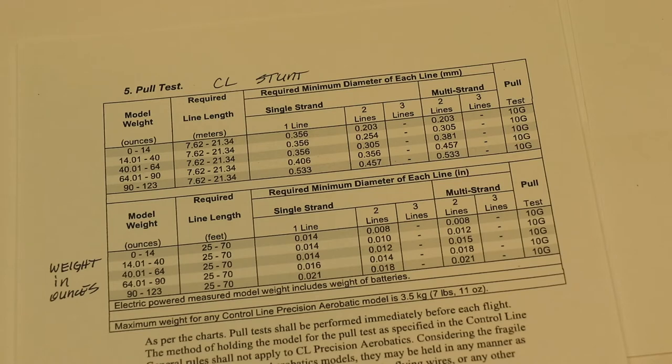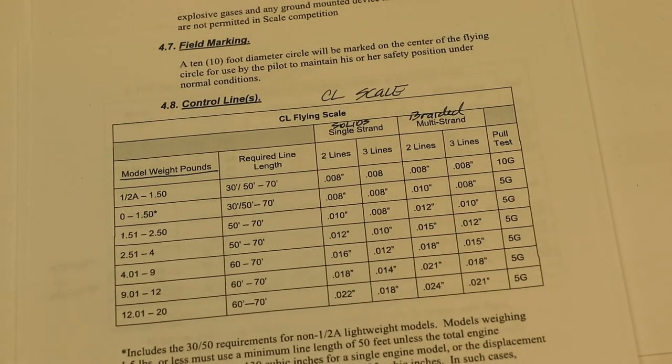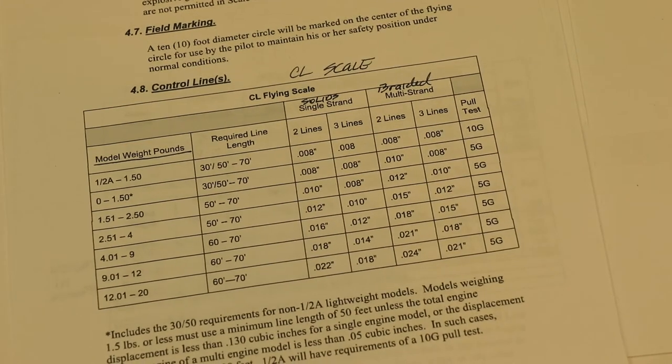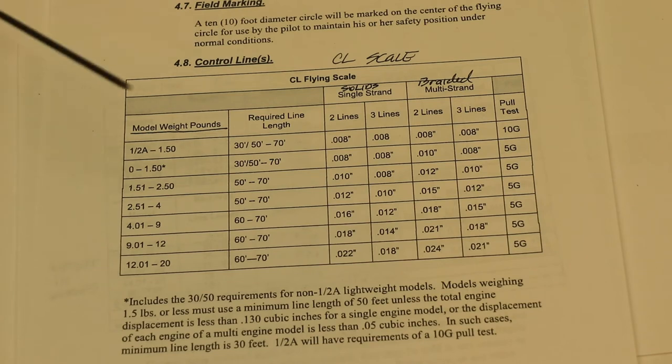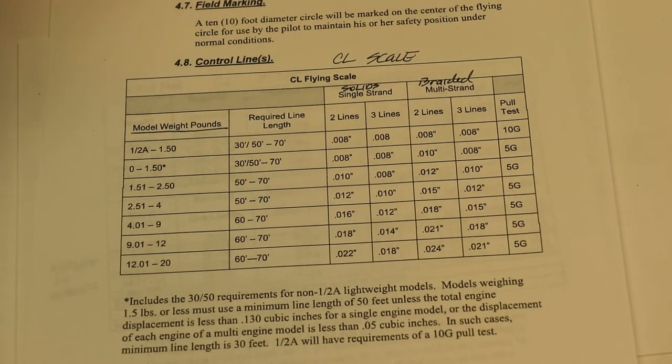Now if you're flying control line scale they do it differently. What they do in control line scale is they also have the weight of the airplane in a range and they have the minimum and the maximum line length and they list out the solids and the braided. Now in control line scale it's only a 5g pull test. In control line stunt it's a 10g pull test. So that's something to also consider.